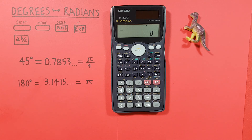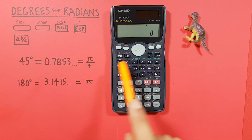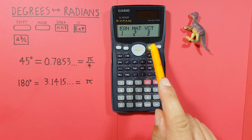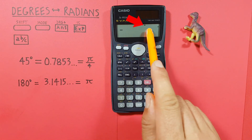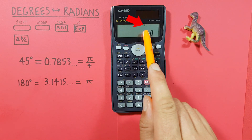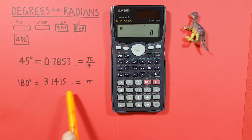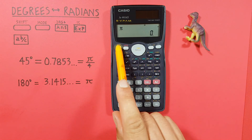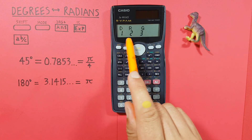And again in reverse — let's say we were given pi and wanted to get that in degrees. Since we're going to degrees, we set our calculator to degree mode. We see the D at the top. Now we enter pi on our screen, and we have to tell our calculator these are radians. So we do shift, answer, and choose number 2 for radians.